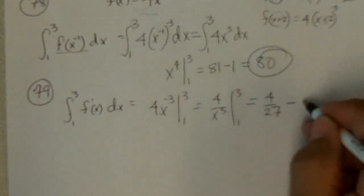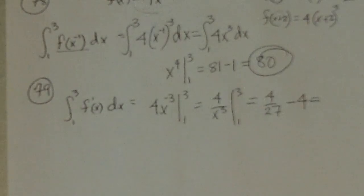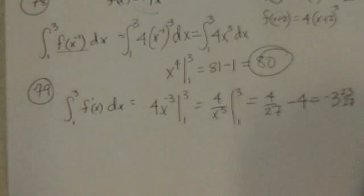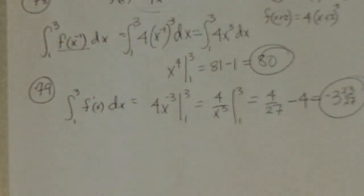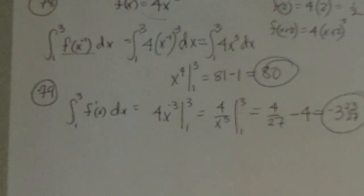And that would be, 3 goes in there and gives us 4 27ths minus 1 goes in there minus 4, which is going to turn out to be a negative answer. 4 27ths less than 4, so that's going to be negative 3 and 23 27ths. And that's it.